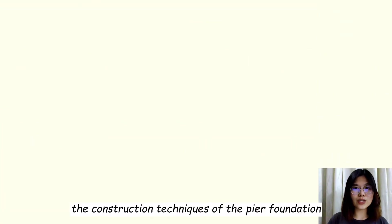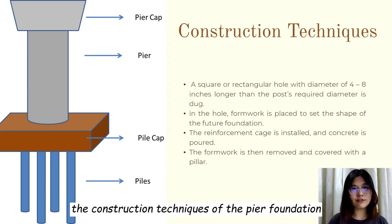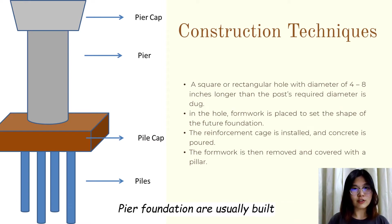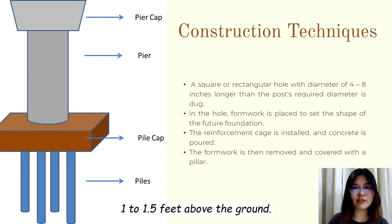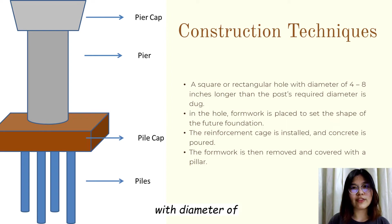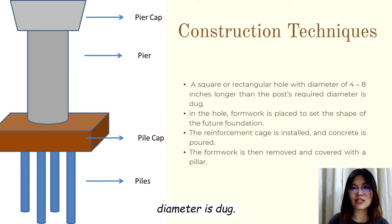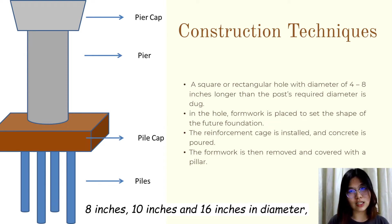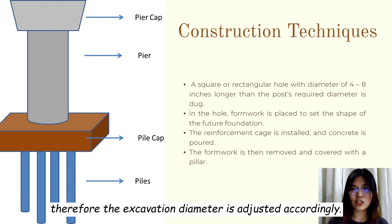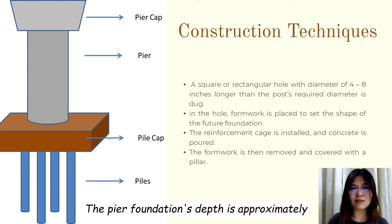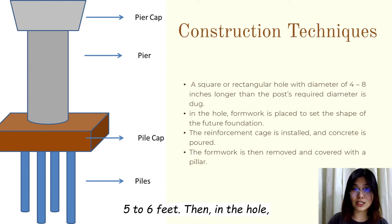Now we will go into the construction techniques of the Pier Foundation at construction sites. Pier foundations are usually built 1 to 1.5 feet above the ground. A square or rectangular hole with a diameter of 4 to 8 inches longer than the post-required diameter is dug. Generally, the piers are 6 inches, 8 inches, 10 inches, and 16 inches in diameter, and the excavation diameter is adjusted accordingly. The pier foundation's depth is approximately 5 to 6 feet.